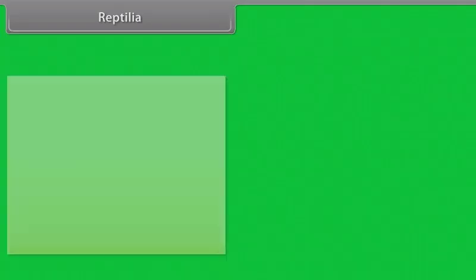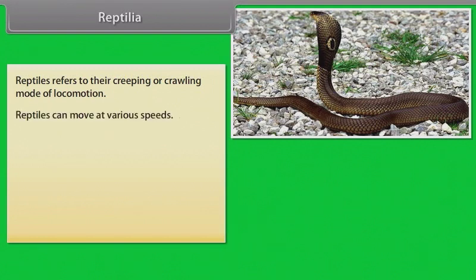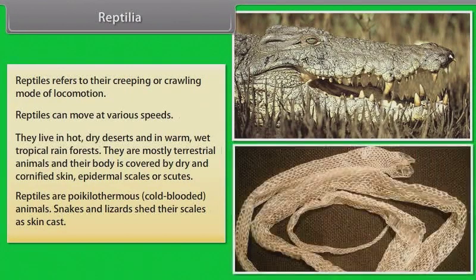Reptilia. Reptiles refer to their creeping or crawling mode of locomotion. They live in hot, dry deserts and in warm, wet tropical rainforests. They are mostly terrestrial animals and their body is covered by dry and cornified skin. Epidermal scales are scutes. Reptiles are poikilothermous or cold-blooded animals. Snakes and lizards shed their scales as skin cast.